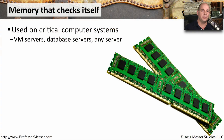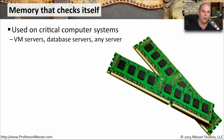The memory inside our computers is not infallible. You can have electrical hiccups, memory that is not seated properly, or bad connections for the memory inside your system. Occasionally, a bit might accidentally get flipped from a one to a zero or vice versa. If you have a critical computer system, you really can't afford to have memory that might be changing values as it goes through the computer, regardless of how rare that might be.